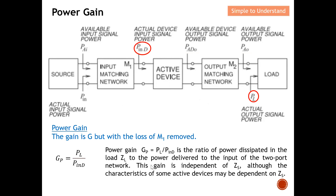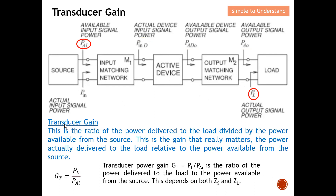Transduction gain is the ratio of the power delivered to the load divided by the power available from the source. This gain really matters because it gives us the bigger picture — the amount generated from the source versus the amount delivered to the load — making it one of the most important gains for determining how much power is actually transferred from source to load.